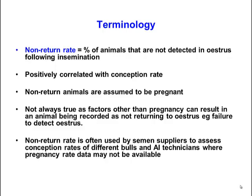Another reason non-return rates may be inflated is early embryonic loss. Even though you'd expect cows to return to heat roughly 21 days after insemination, if the embryo is still viable at that point but subsequently dies, the cow will come into heat after the embryo dies. So non-return rate is usually higher than actual pregnancy rates, but it does reflect pregnancy rates. It's useful when pregnancy testing hasn't been done but you have information on which cows were inseminated and whether they returned to heat — for example, for semen companies assessing fertility of certain batches of semen or evaluating specific inseminators.